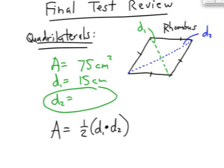Well, the area is given to us as 75, and the d1 diagonal is 15, and so now I'm looking for d2.